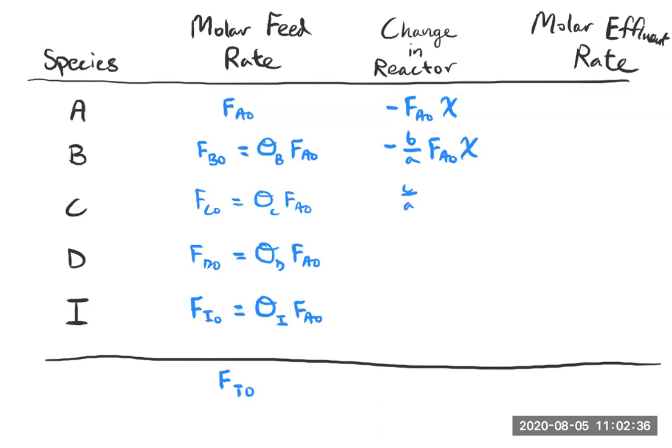C is a product. And again, the amounts that are made, the changes in the reaction are directly related to how much A we start with coming into the reactor and its conversion. What is the change in the reactor for species I? Well, we know there isn't a change. So I'll just leave that. That's not a negative sign. That's a sort of a blank.